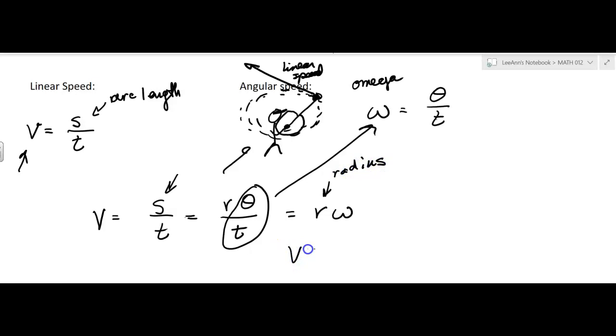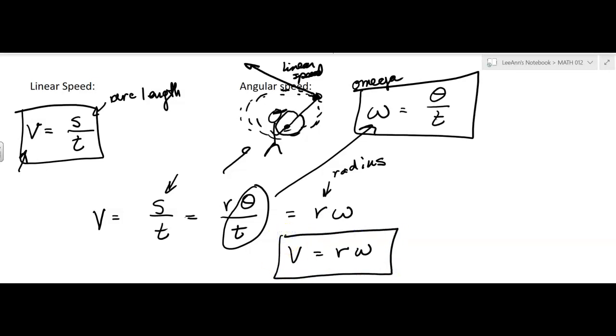Okay, so velocity can also be given as the radius times the angular speed. Okay, so I think those are all the formulas. There's three of them. There's linear speed, there's angular speed, so it's traveling, it's not going any place, it's just traveling in a circle, but it's how fast it's going around that circle. And then there's also the velocity, the linear speed in terms of radius and angular speed.